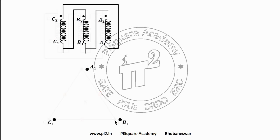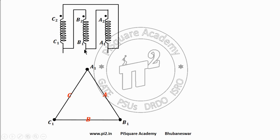The fourth delta configuration has connection terminals A1, B1, C1. Between A1 and B1, coil A is connected; between B1 and C1, coil B is connected; between C1 and A1, coil C is connected. So now we understand how to draw the primary side vector diagram for different configurations. We will see in the next part both primary as well as secondary. Thank you.